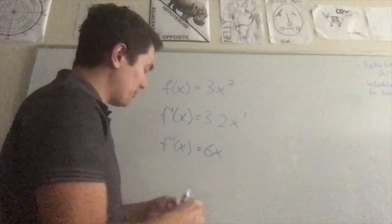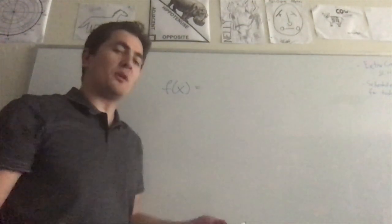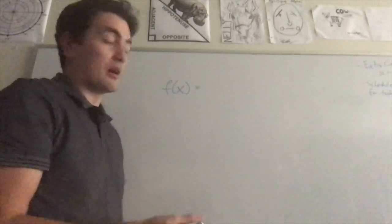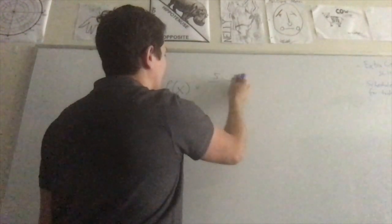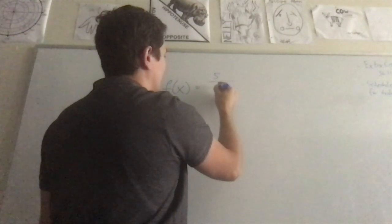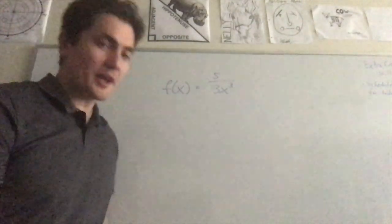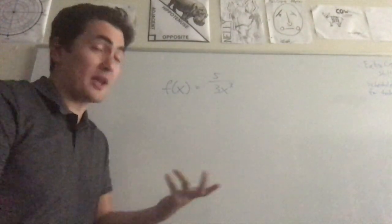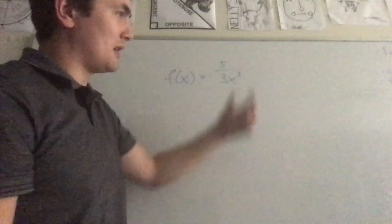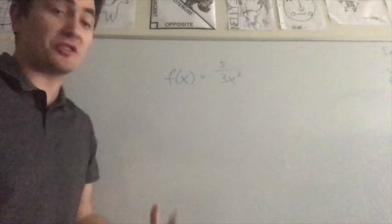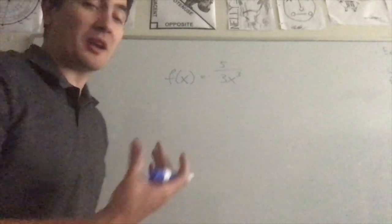Let's do another example that's a little bit more complicated. Let's try 5 over 3x cubed. To use the power rule, we need it in the form of some real number times x to a power. So another way to write this is 5/3 times x to the negative 3, by moving x cubed up top and changing the sign.